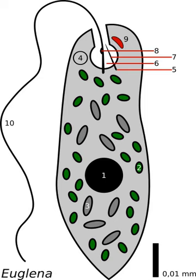The eyespot apparatus, or stigma, is a photoreceptive organelle found in the flagellate or motile cells of green algae and other unicellular photosynthetic organisms such as euglenates. It allows the cells to sense light direction and intensity and respond to it by swimming either towards the light — positive phototaxis — or away from the light — negative phototaxis.